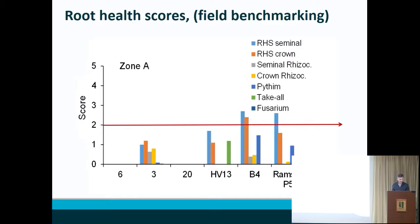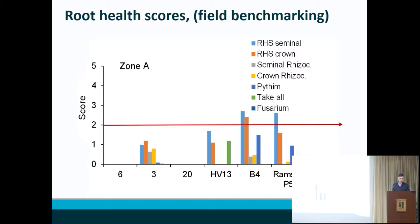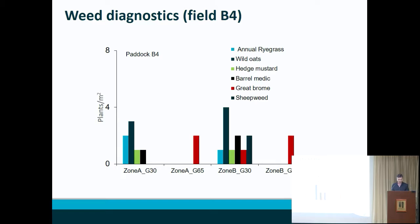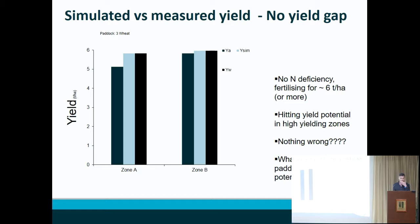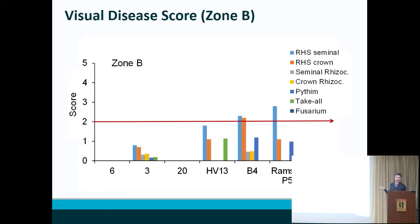We have the visual disease scores as well in other fields — this is zone A and zone B. We are able to explore whether the diagnostics of weeds change from one zone to the next. Moving on from a paddock that does have damage: the conclusion from that first paddock was that it appears there is a disease and pathogen problem that is not being managed and now needs to be addressed. That would be the explanation for the yield gap in that particular field.